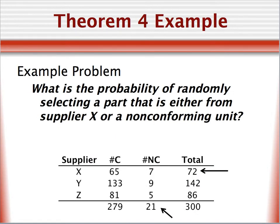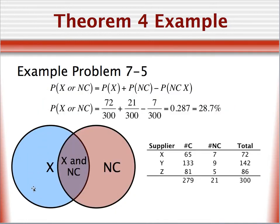To apply theorem four, let's ask this question. What is the probability of randomly selecting a part that is either from supplier X, or a non-conforming unit? In this case, the blue represents the probability of pulling a part from supplier X. The orange represents the probability of selecting a part that is non-conforming, and this middle area represents the probability of selecting a part that comes from supplier X and is non-conforming. So we add the probability of 72 divided by 300, which is the probability of selecting a part from supplier X. We add that to the probability of selecting a part that is non-conforming, and we subtract the mutually exclusive event. In this case, there are seven parts that are non-conforming and come from supplier X.